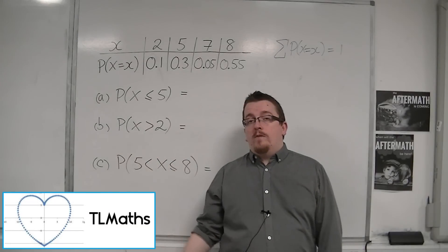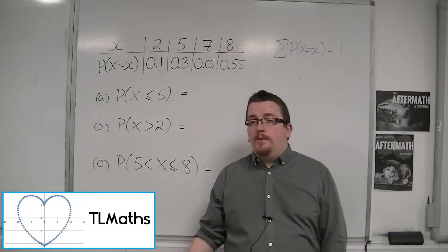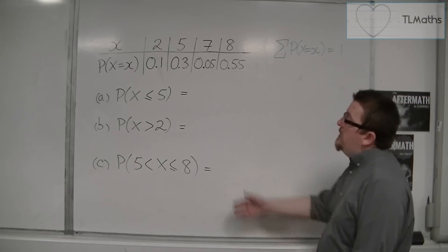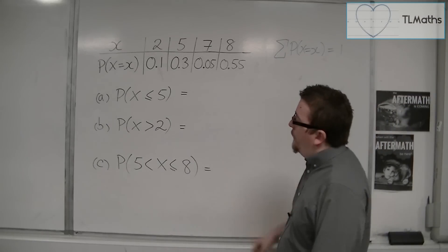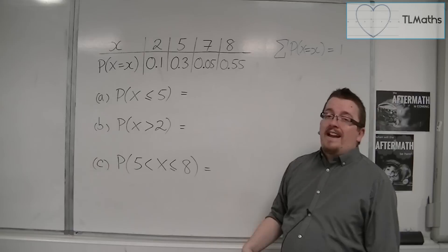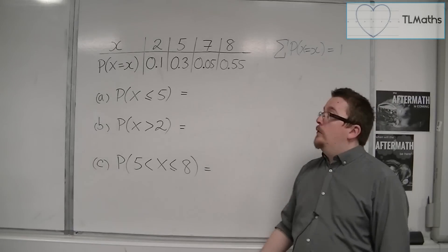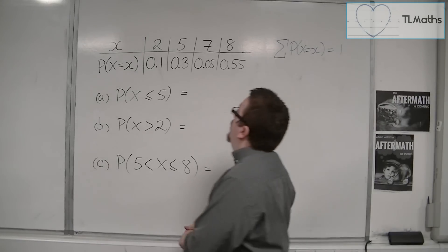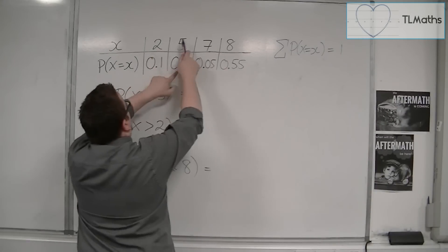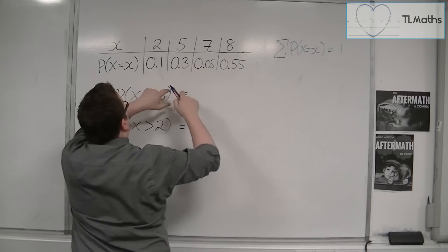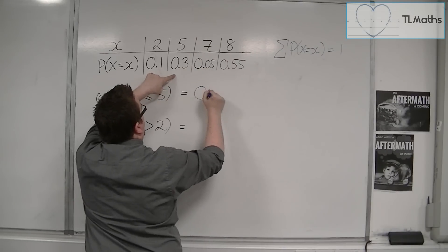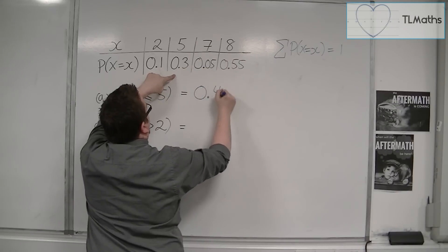Here's another discrete probability distribution. We don't have to find A this time, but we just need to answer these questions. If we want the probability of X being less than or equal to 5, we would be including 2 and 5 in this case. So that's 0.1 plus 0.3, which gives us 0.4.